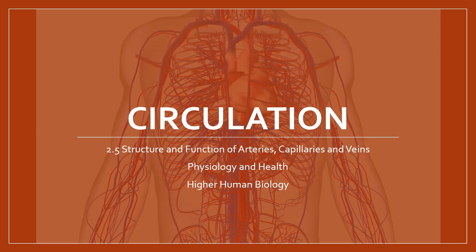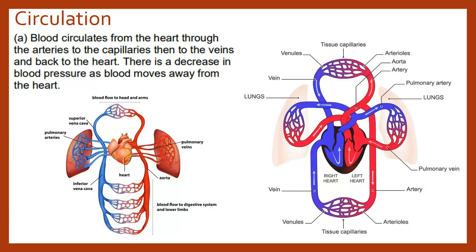In this video we'll be starting the cardiovascular system section of the physiology health unit by looking at circulation, which forms part of 2.5 structure and function of the arteries, capillaries and veins. The direction of blood flow is: the heart pumps out blood via the arteries, which then gets delivered to the body tissue via the capillaries, and blood is then taken back towards the heart via the veins.